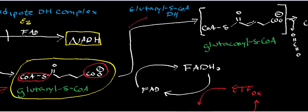The first enzyme is called glutaryl-S-CoA dehydrogenase. Mechanistically, it's identical to the fatty acyl-CoA dehydrogenase from normal beta-oxidation. It's going to oxidize the alpha and beta carbons to form a trans-alkene — specifically the trans-alkene we would normally see in beta-oxidation. The molecule generated through this dehydrogenase is glutaconyl-S-CoA. We take the electrons from glutaryl-S-CoA and transfer them onto FADH2.